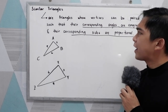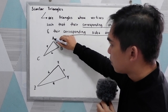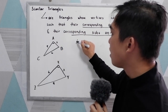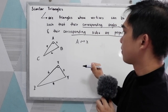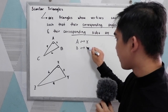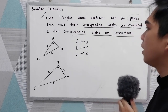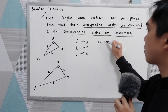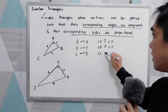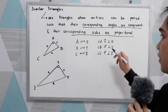Let's find out first the corresponding angles. A corresponds to X, B corresponds to Y, and C corresponds to Z. If they are congruent: angle A is congruent to angle X, angle B is congruent to angle Y, and angle C is congruent to angle Z. After checking the corresponding angles and confirming they are congruent, let's proceed to the sides.